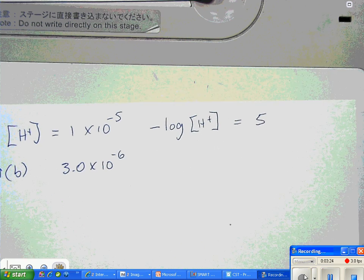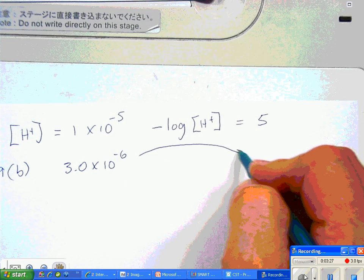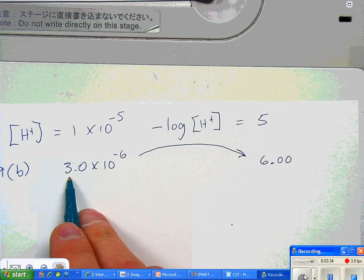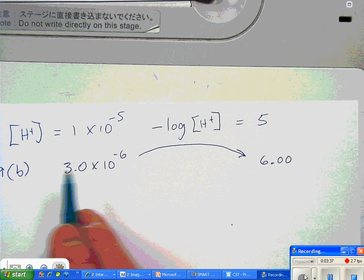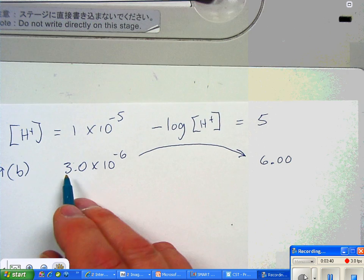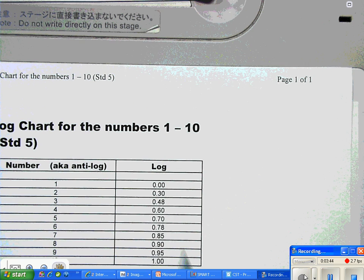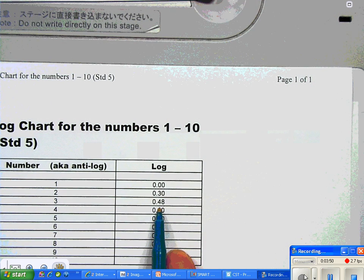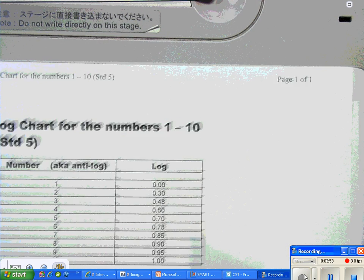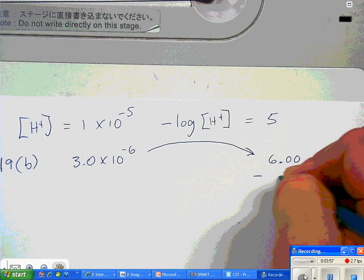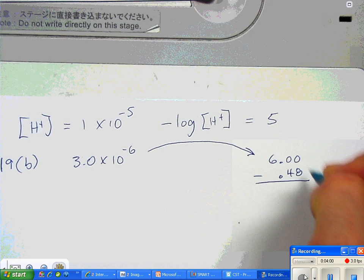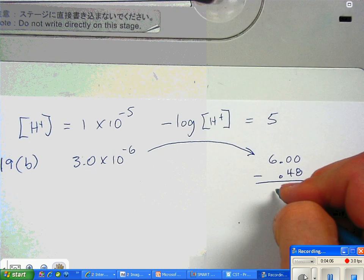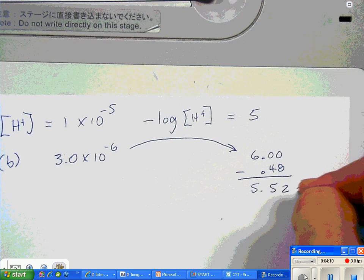First thing we do: we know what the log of 10 to the minus 6 is, correct? So we're going to start with that—10 to the minus 6 is 6. Then we're going to take the log of this guy and we're going to subtract it. So the log of 3, we look on the chart and we see that that's 0.48. 0.48 is going to be subtracted from this guy, and we get 5.52, which is equal to the pH.